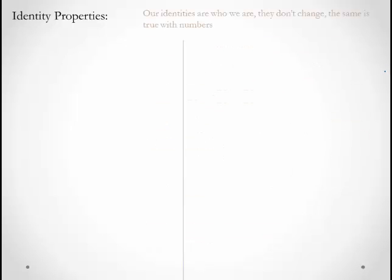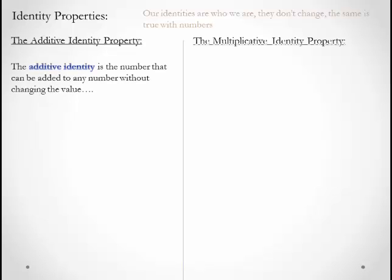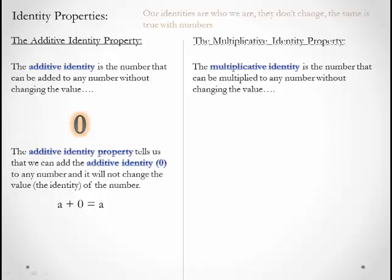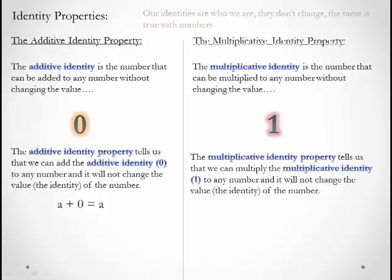There are two properties of identity. Identity is who we are — that doesn't change. The additive identity is the number that can be added to any number without changing the value. That number is 0. The multiplicative identity is the number that can be multiplied to any number without changing the value. That's 1. So a × 1 will still be a.